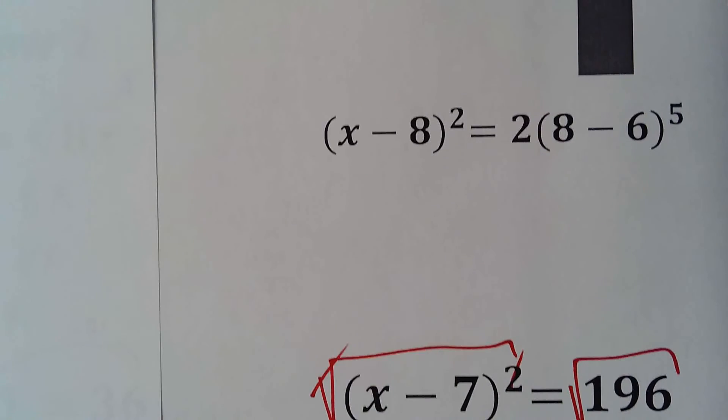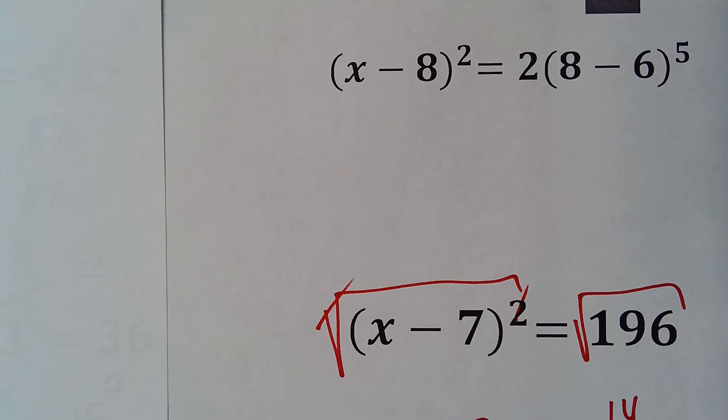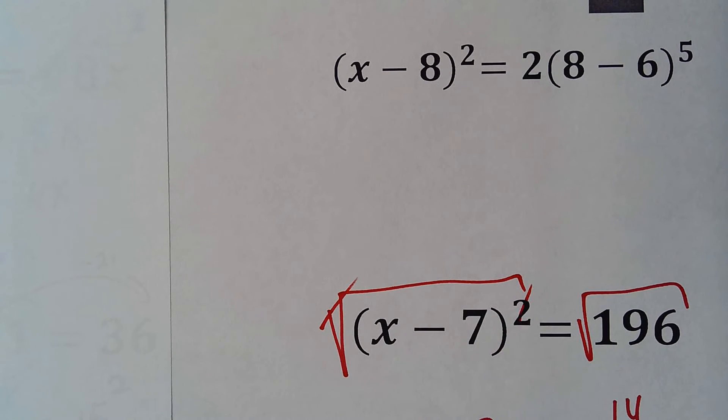Now let's solve another example. Here we have x minus 8 squared. This 5 doesn't matter because those are numbers, so this will be a number.